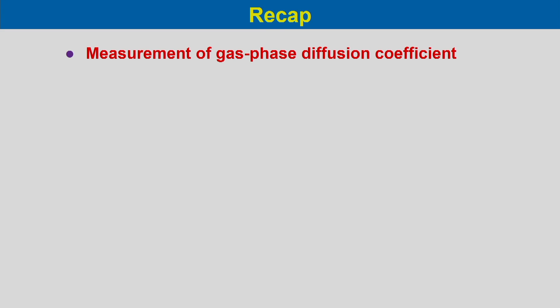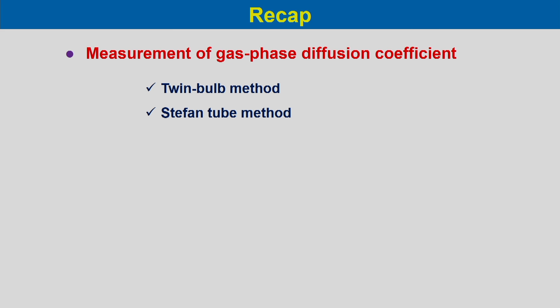In our previous lecture we discussed measurement of gas phase diffusion coefficient, and under these experimental measurements we considered two methods. The first method is the twin bulb method, where we considered counter-current diffusion for two components and solved certain problems. The second method is the Stefan tube method, where we considered diffusion of a component through non-diffusing B.